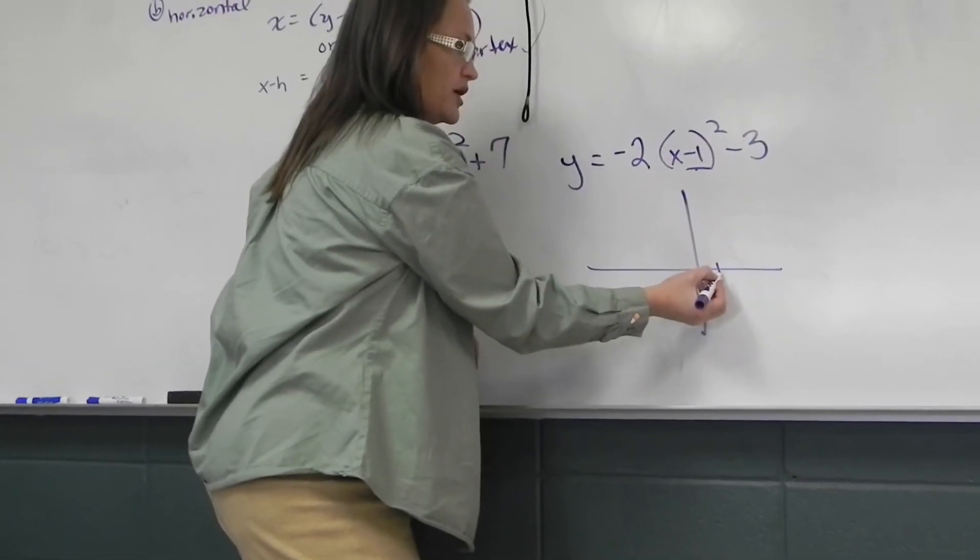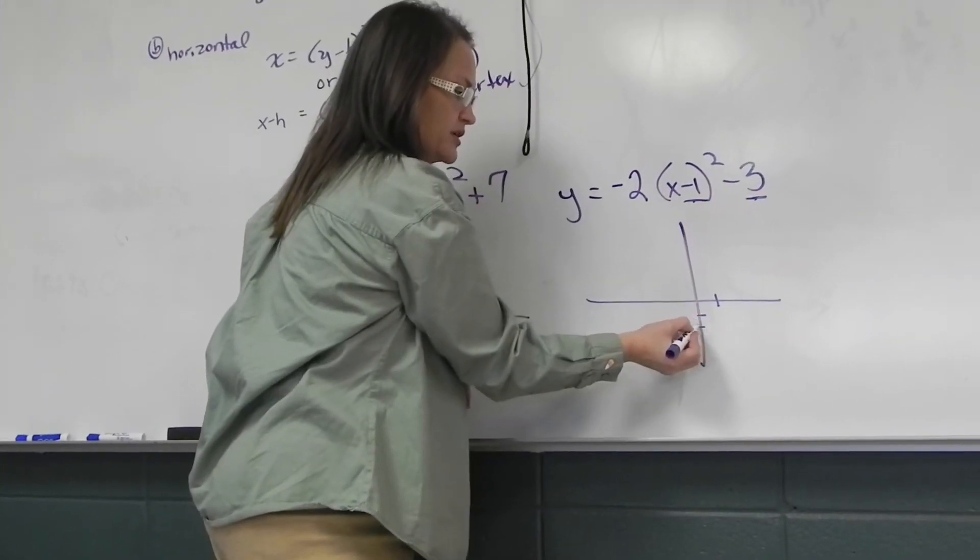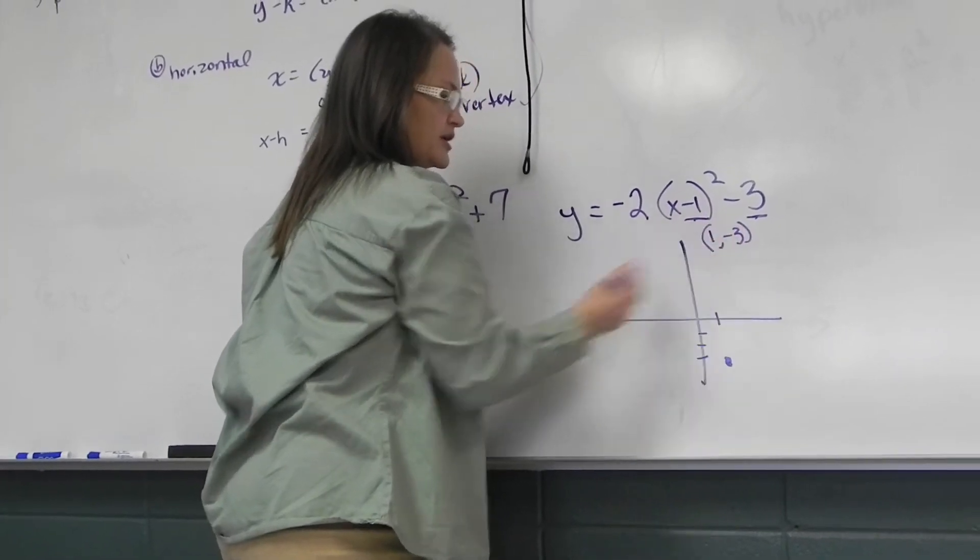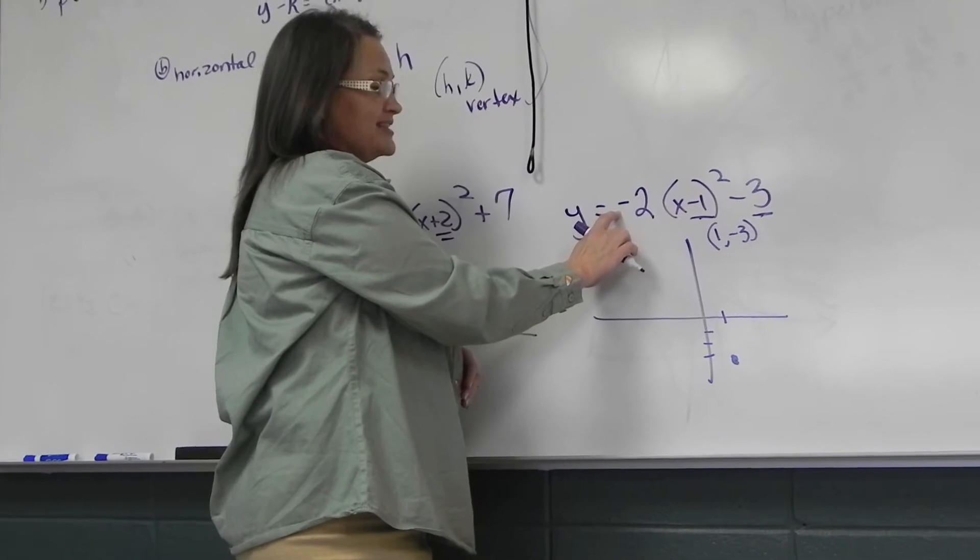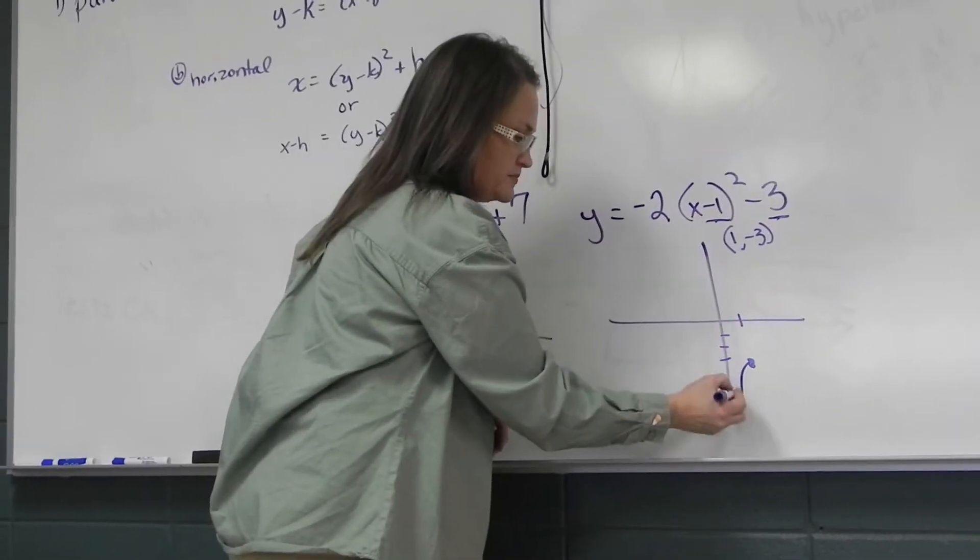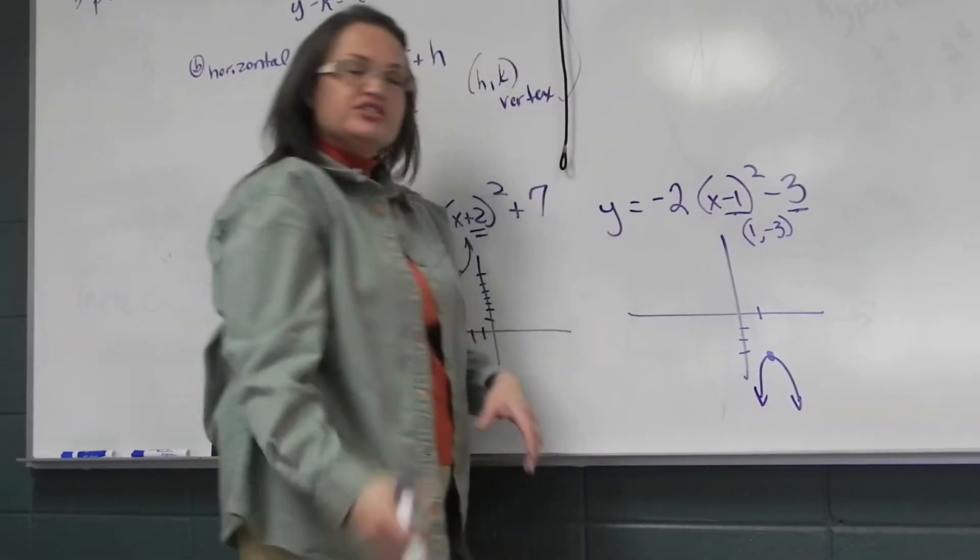This shifts it over 1 and down 3. The vertex is positive 1, negative 3. The negative sign flips it upside down, and the coefficient 2 makes it a little skinnier. Stretches it vertically.